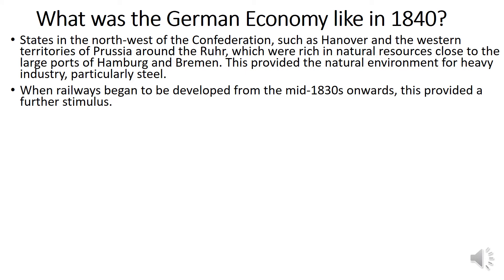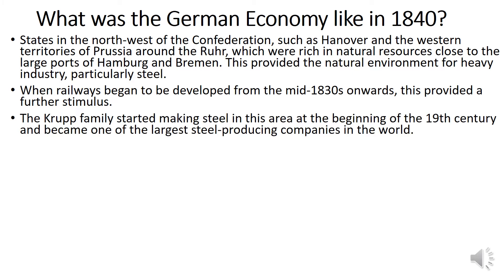When railways began to develop from the mid-1830s onwards, this provided further stimulus for the area. Heavy investment in railways allowed goods to move from the Ruhr up to the ports, increasing the amount of product that could be produced and sold abroad. An example is the Krupp family, who started making steel in this area at the beginning of the 19th century and became one of the largest steel-producing companies in the world. This shows just how valuable the Ruhr area was — states with land there had a clear economic advantage.